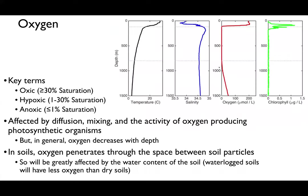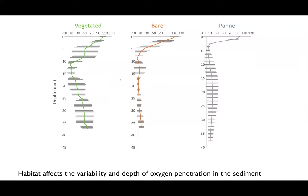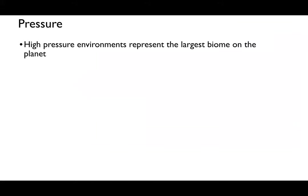This oxygen depletion happens not just at large scales like 500 meters of water column, but also at sub-millimeter scales. Data from a grad school project showed oxygen penetrating only to 3–3.5 centimeters in soils, disappearing very quickly. Oxygen penetration in these environments is affected by water content — if there's a lot of water, oxygen doesn't penetrate as deep. Next up is pressure.